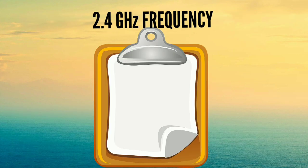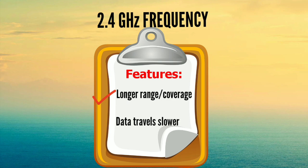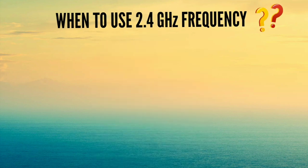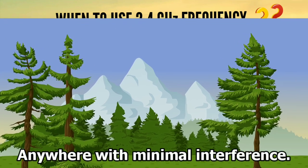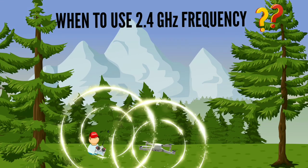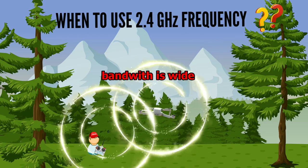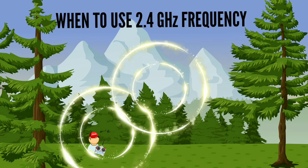Now let's take a look at the 2.4GHz frequency. It has two main features: it has a longer range and coverage, and the data travels slower than that of the 5.8GHz. You could use this frequency when you're in the countryside or in an area where there is little interference. Interference can come from trees, mountains, any solid structure, and even Wi-Fi. As shown in the illustration, the signal is very strong even when the drone is moving far away.